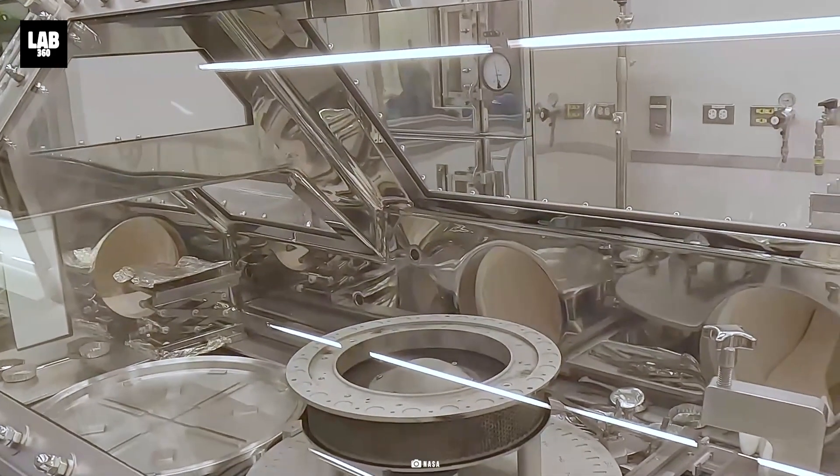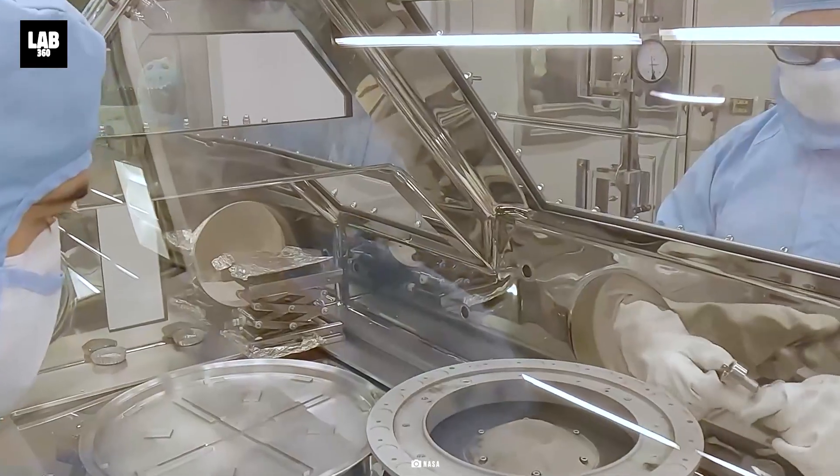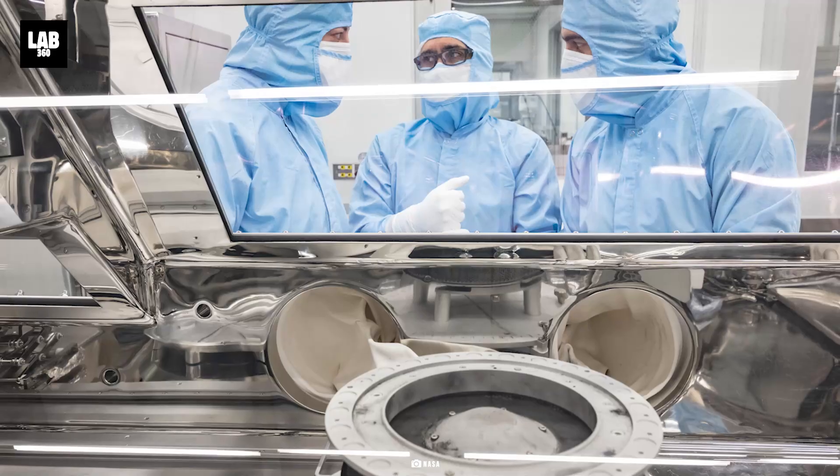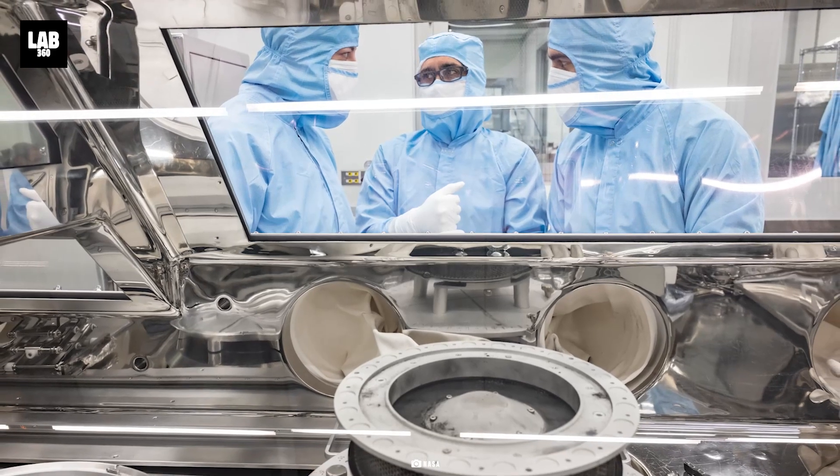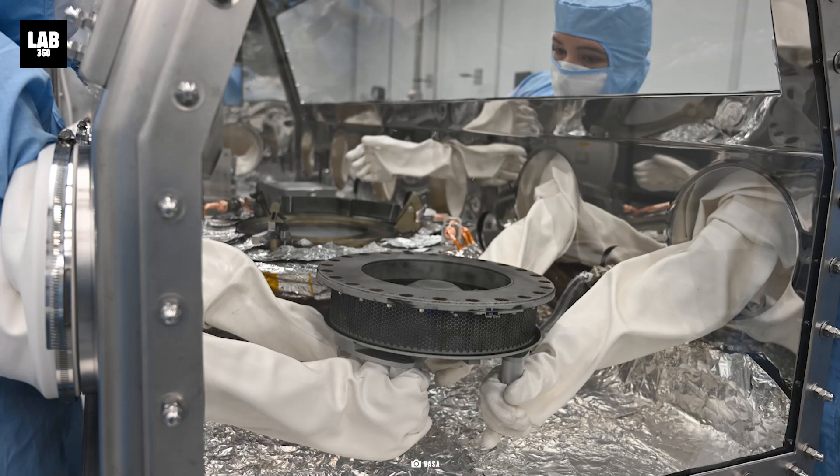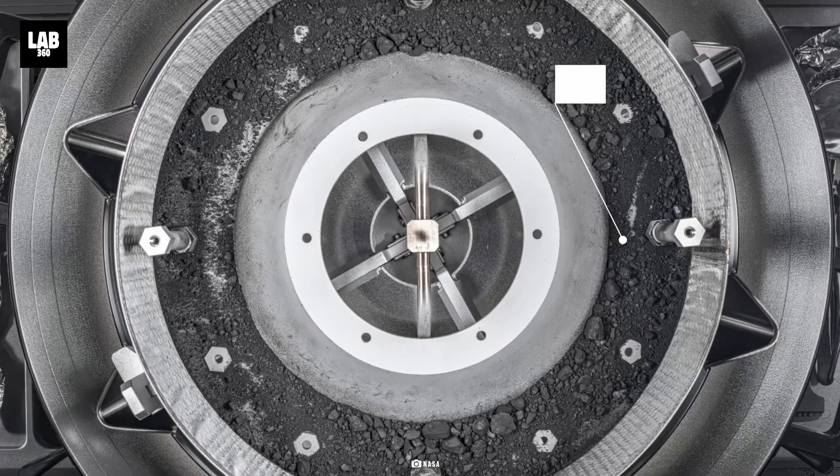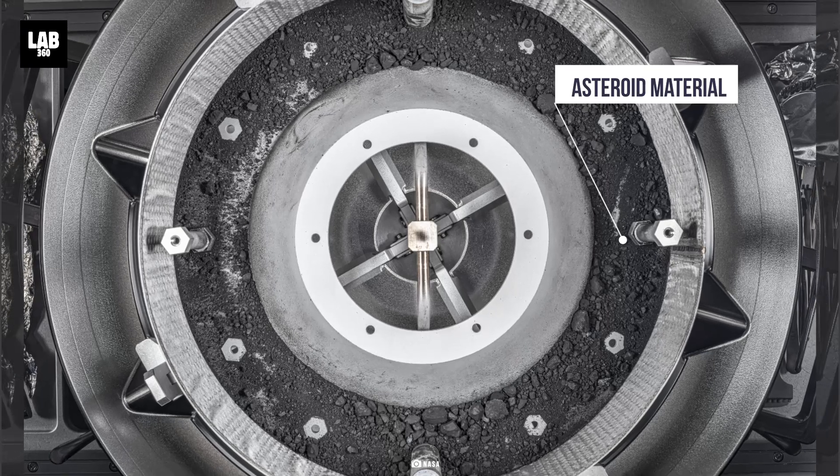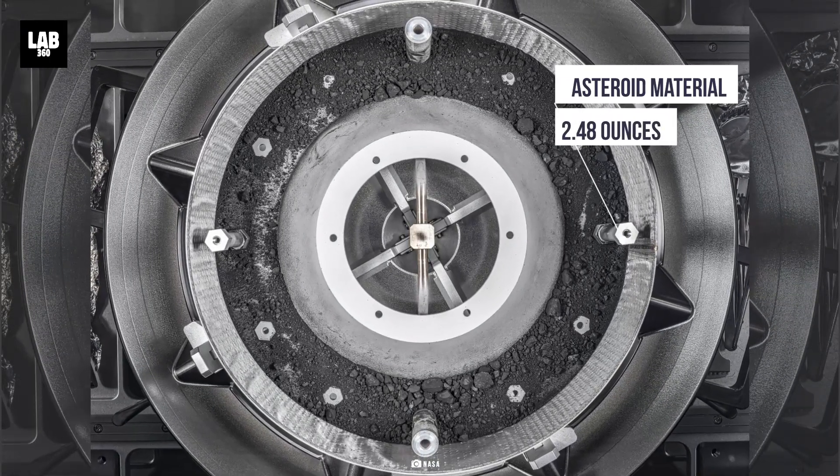Post that, they will remove the round metal collar and transfer the remaining sample from the Touch and Go Sample Acquisition Mechanism, also known as TAGSAM, head into pie wedge sample trays. The remaining material includes dust and rocks up to about 0.4 inches in size. NASA had expected the asteroid material collection to be 2.12 ounces but surpassed it with 2.48 ounces.